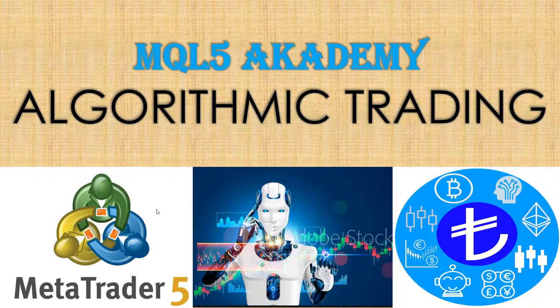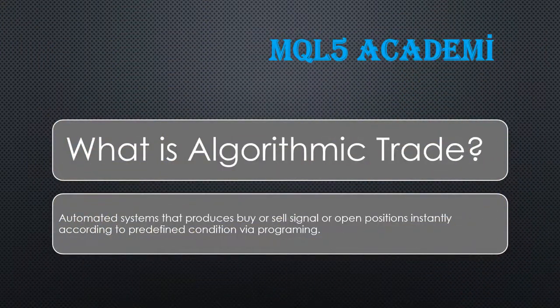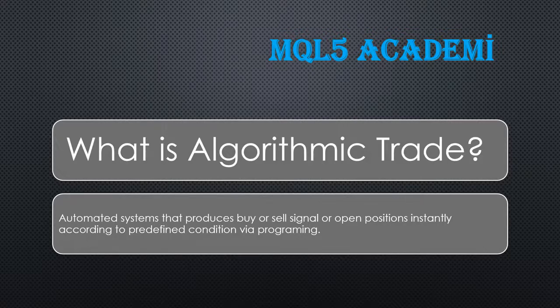Let's get started. What is algorithmic trading? It is an automatic system that produces buy or sell signals or opens positions instantly according to predefined conditions via programming. We should not forget: this automatic system does not trade by itself — the conditions have to be defined by someone. The algorithms only trade when the predefined conditions are true; the system only does what we want it to do, nothing more.